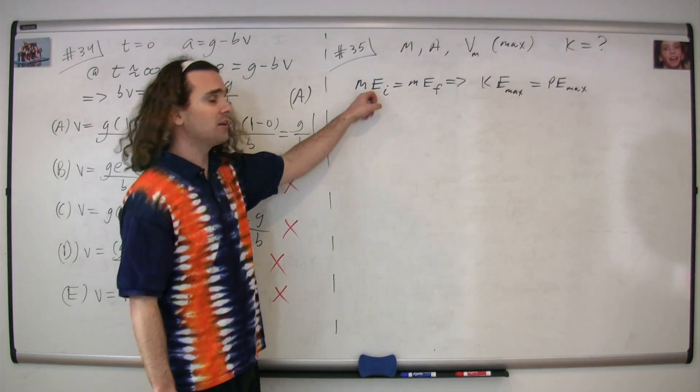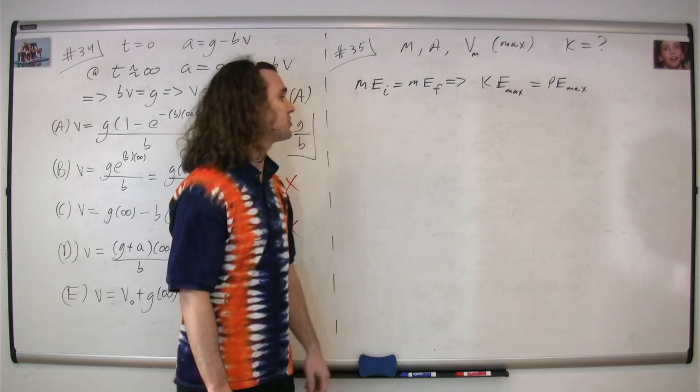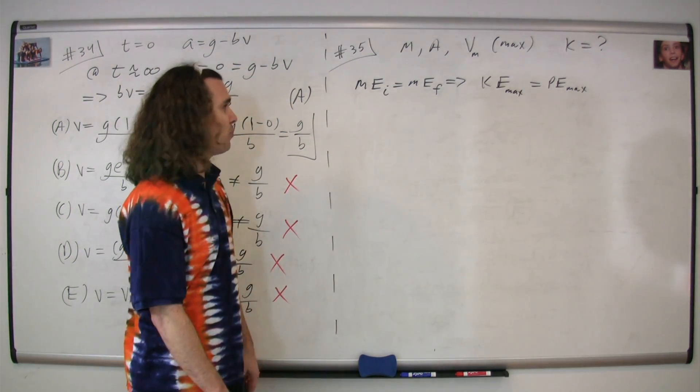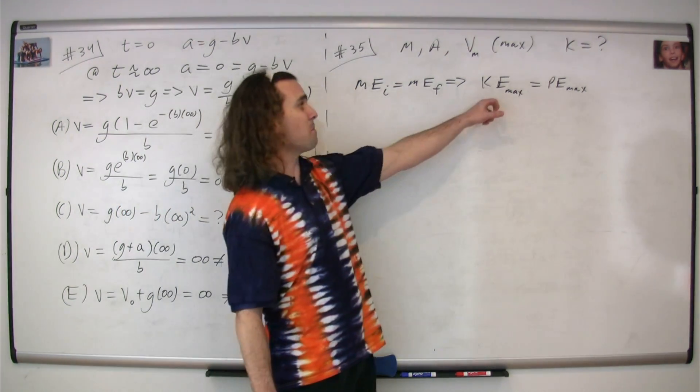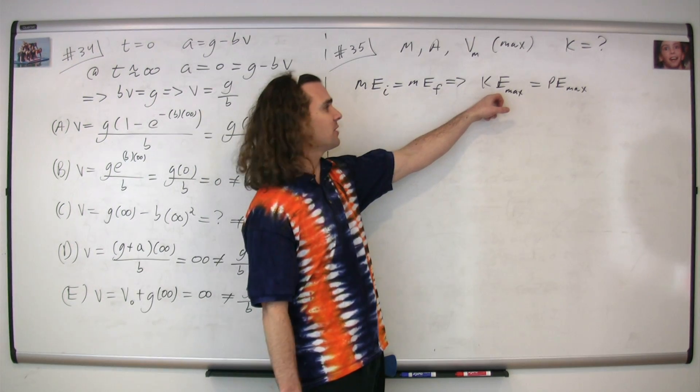In other words, the total mechanical energy initial is equal to the total mechanical energy final. So we'll take our initial point at equilibrium position where it has its maximum kinetic energy and it has zero elastic potential energy.